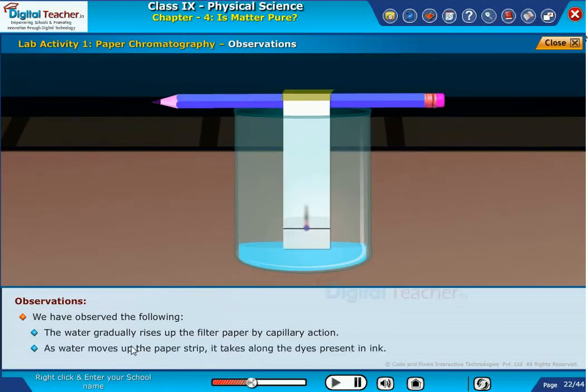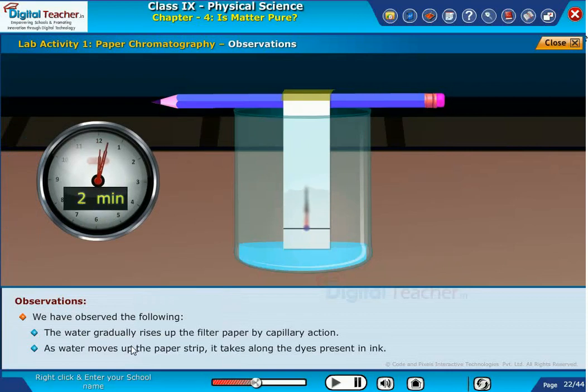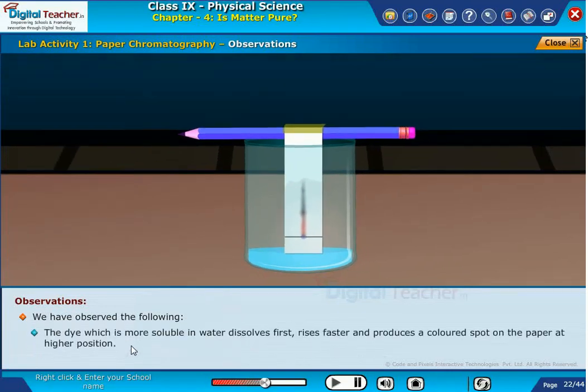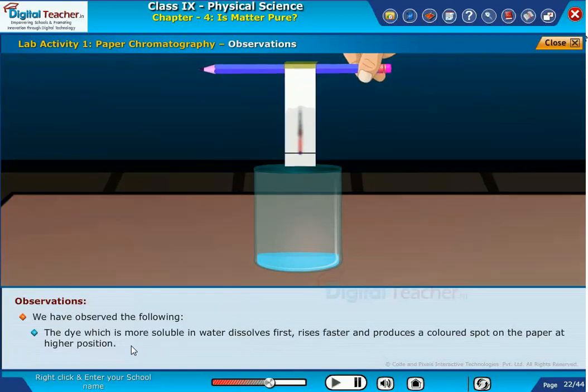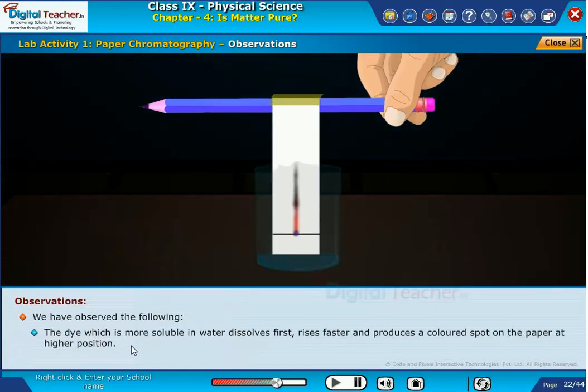As water moves up the paper strip, it takes along the dyes present in ink. The dye which is more soluble in water dissolves first, rises faster, and produces a colored spot on the paper at a higher position.